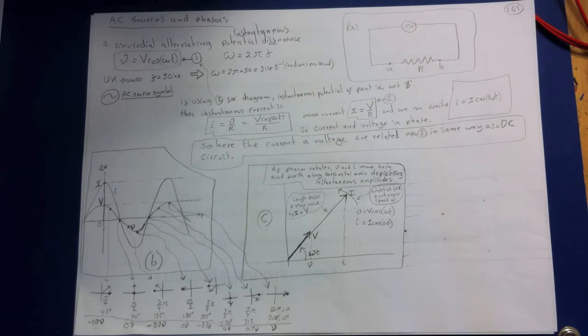The vector whose length corresponds to the amplitude of the quantity rotates counterclockwise with constant angular velocity omega. These rotating vectors are called phasors and diagrams containing them are called phasor diagrams.